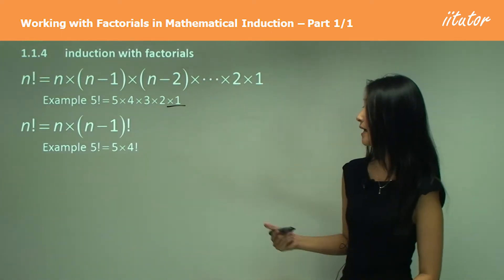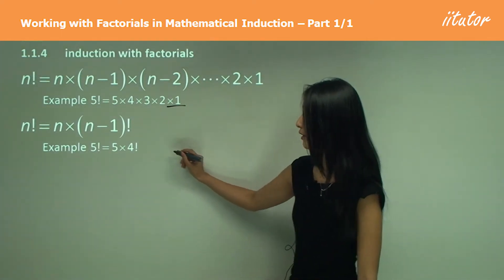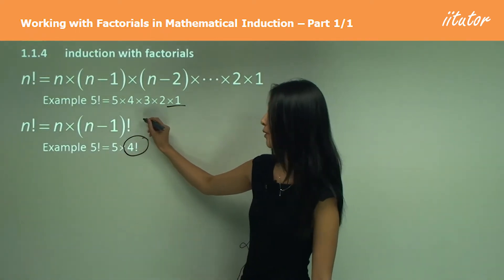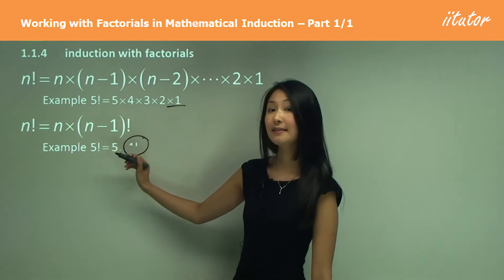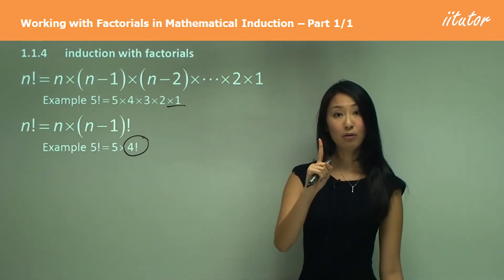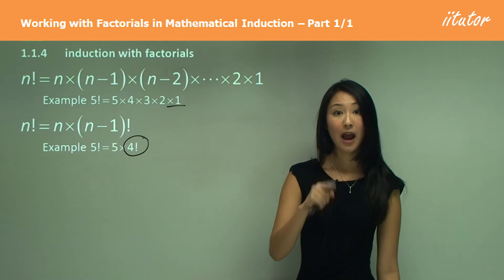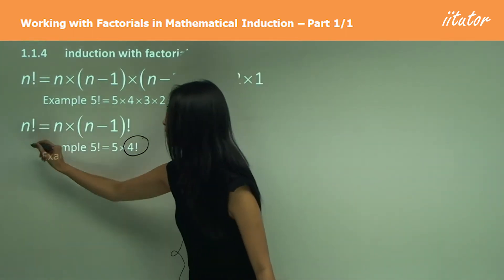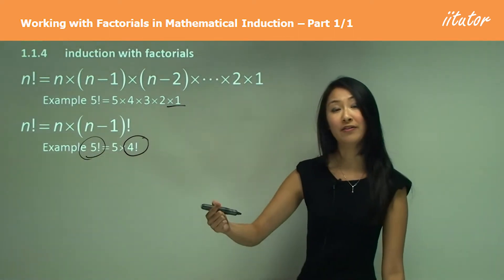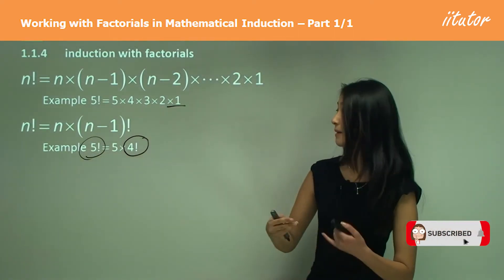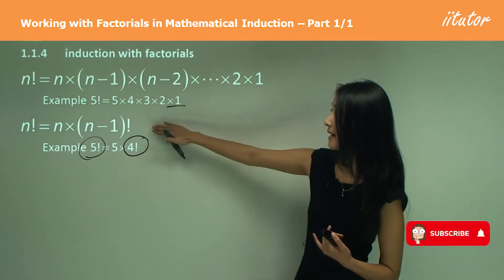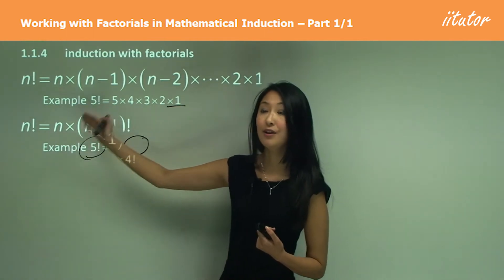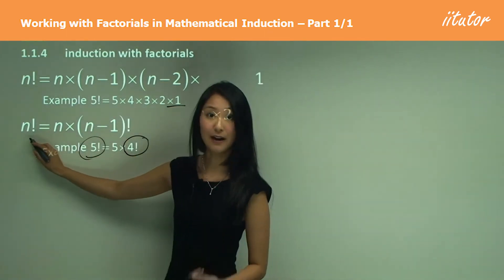So if you ever see a factorial — like 4 factorial or (N−1) factorial — and you see that the number it's multiplied by is one more than what it is, then you can assume that it's going to be that one-number-more factorial. To be more clear: if you see (N−1) factorial and it's being multiplied by the number greater than that, you can say it's going to be N factorial.